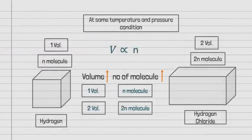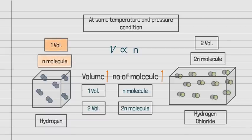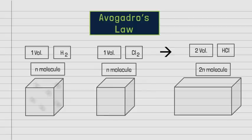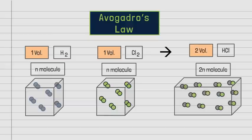Volume is directly proportional to the number of molecules, so an increase in volume implies an increase in the number of molecules. If system 2 has double the volume of system 1, it will have twice the number of molecules. Applying this to the hydrogen-chlorine reaction: 1 volume of hydrogen combines with 1 volume of chlorine to form 2 volumes of hydrochloric acid. Thus, n molecules of hydrogen combine with n molecules of chlorine to form 2n molecules of hydrochloric acid.